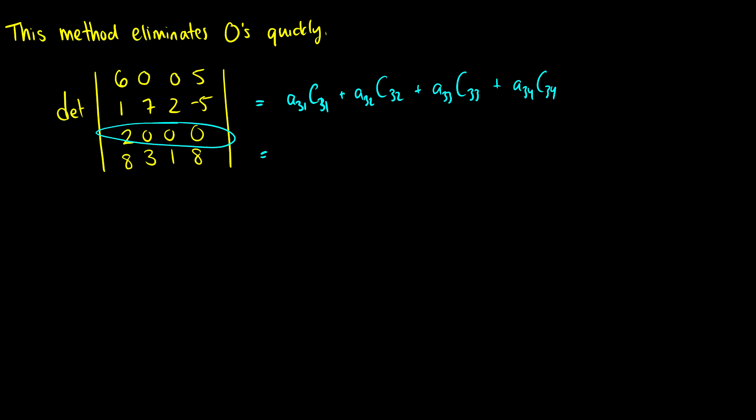This is going to be A31 times C31 plus A32 times C32 plus A33 times C33 plus A34 times C34. So that's cofactor expansion across the third row. C31 is 2, and we multiply by the determinant of the submatrix of A31. In this case, we get rid of the third row and the first column, so we're left with the determinant of 0, 0, 5, 7, 2, negative 5, and 3, 1, 8. And we have to take negative 1 to the power of i plus j, which is 3 plus 1.